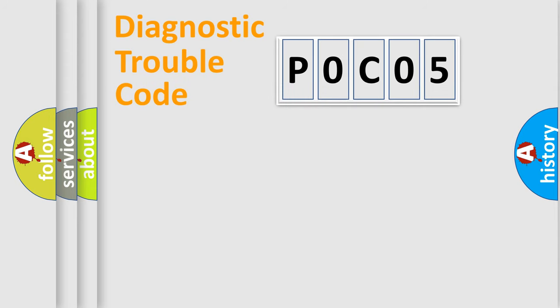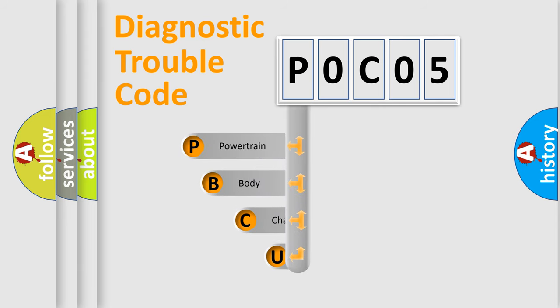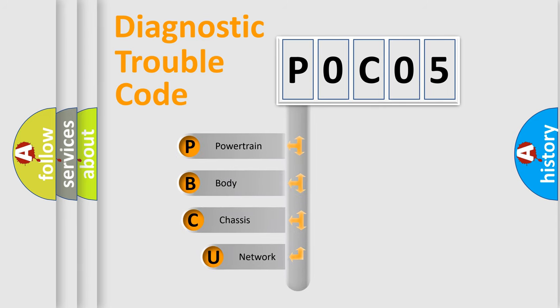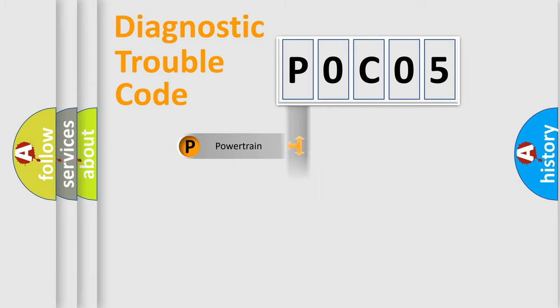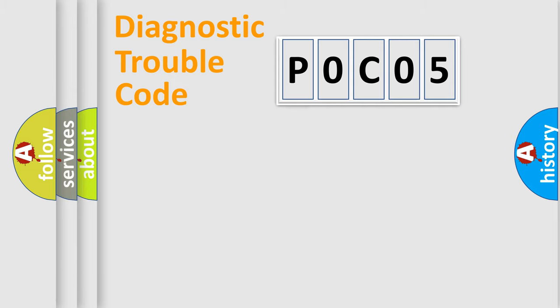Let's do this. First, let's look at the history of diagnostic fault code composition according to the OBD-II protocol, which is unified for all automakers since 2000. We divide the electric system of an automobile into four basic units: powertrain, body, chassis, and network.